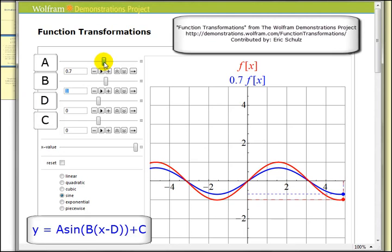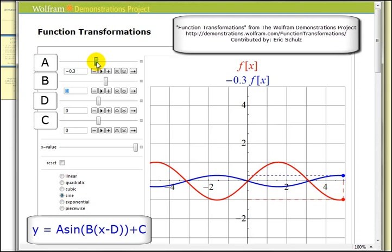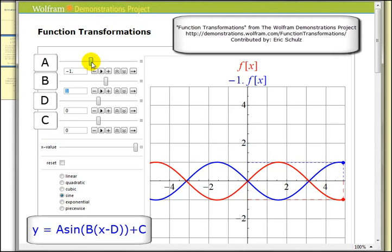And then notice as soon as A turns negative, the function is reflected across the X axis. So even though when A is negative one, for example, our amplitude is still one, but it is a reflection across the X axis.